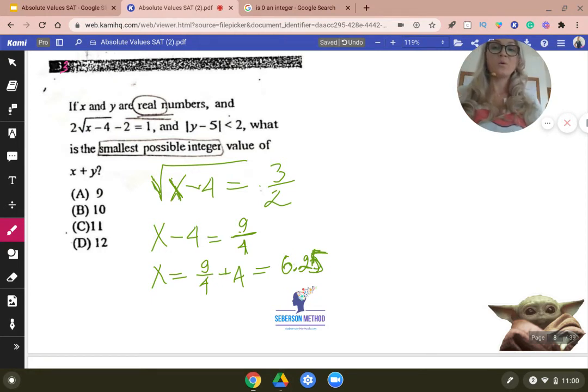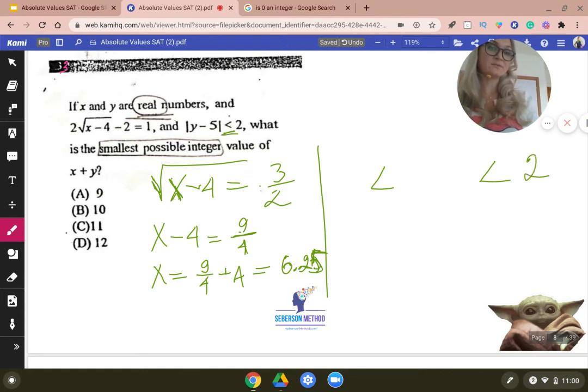Now, what are my possibilities for y? Remember how to solve an absolute value inequality? We take the equal sign in the exact same inequality sign in the exact same direction as we see it in the problem. And we say two, and then negative two. And then we keep the insides. And then how do we isolate y by itself? We add five on both sides. So y is somewhere between seven and somewhere between three.